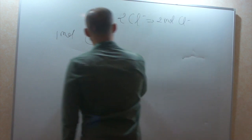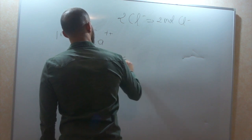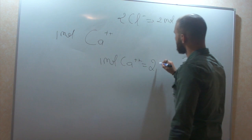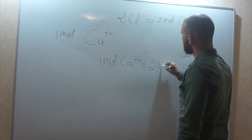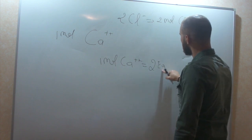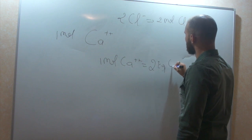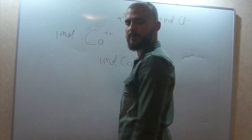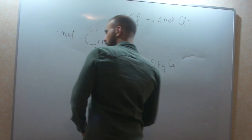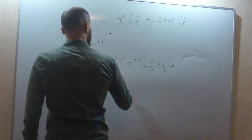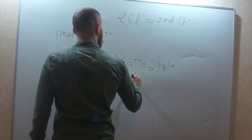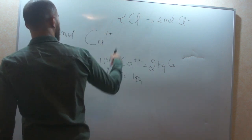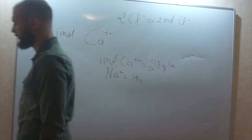So, now you can guess. 1 mole of calcium equals 2 equivalents of calcium. As simple as that. For sodium, for example, 1 mole of sodium is just 1 equivalent of sodium. Alright.